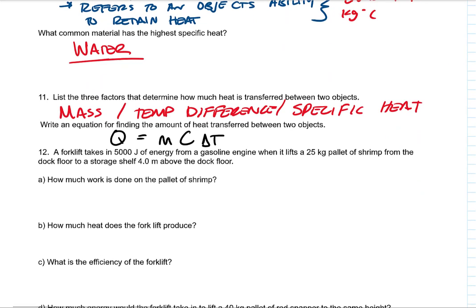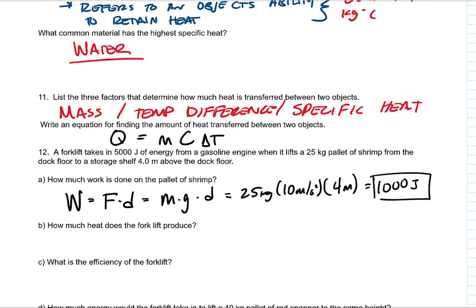A forklift takes in 5,000 joules of energy from a gasoline engine when it lifts a 25 kilogram pallet of shrimp from the dock to the floor, four meters above the dock. How much work is done on the pallet of shrimp? That work is the force times the distance in lifting the shrimp. The force to lift the shrimp is mg and the distance is the distance they gave us. So, 25 kilograms times 10 meters per second squared times 4 meters gives me 1,000 joules. And that's the work out.